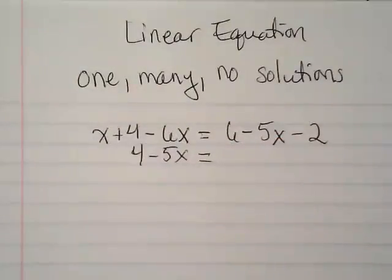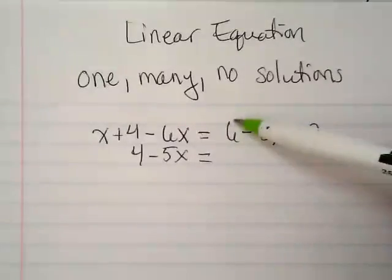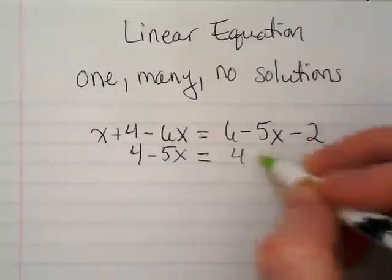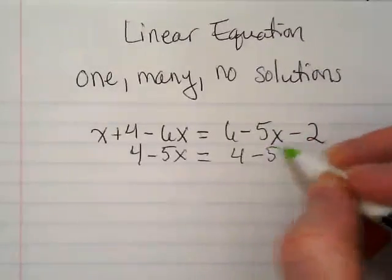On the right side of the equation, I have a positive 6 and a negative 2. So we're going to get 4 minus 5x.